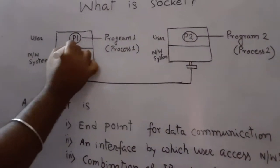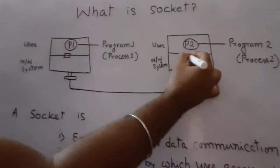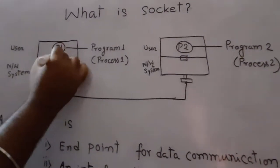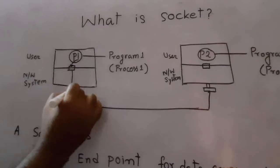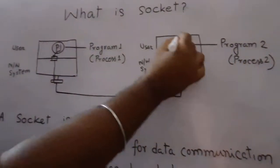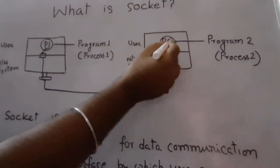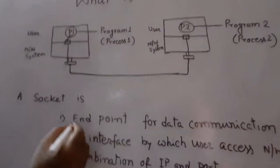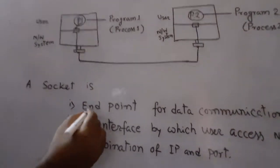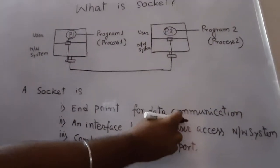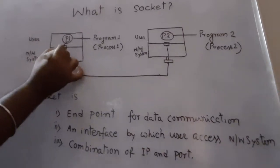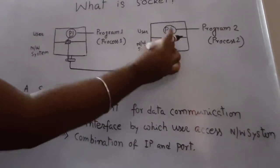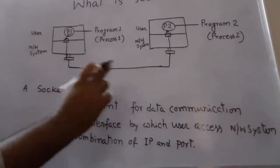First of all, we will create a socket here and we will create another socket here. The user will send data to the socket and the data will automatically go to that particular system. From the other end, the user will access the data from the socket. So a socket is the end point for data communication, because the user is accessing the socket on both ends — these are the end points.